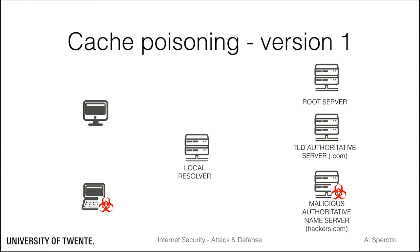Cache poisoning attacks aim at corrupting the information in the caches. Let's look at a first variant of a cache poisoning attack. In the past, authoritative name servers could send, together with the requested resource record, also a so-called additional section with extra information. The additional section could contain, for example, a resource record for a domain not related to the one that was requested.